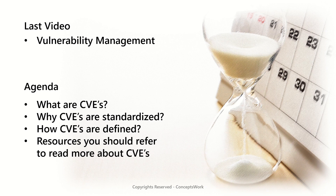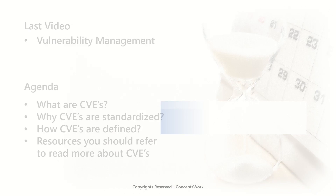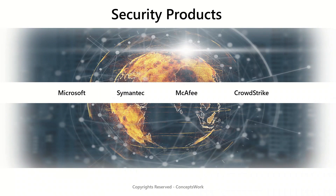Let's begin. When we talk about security products available across the globe, some leaders are Microsoft, Symantec, McAfee, and CrowdStrike. There are many other security vendors as well, but I'm listing these to create a hypothetical example. All these vendors offer different security solutions for all the digital estate — likewise identity, endpoint, or network.